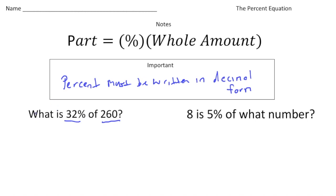So the part is going to be the unknown. We're going to say n is going to equal, right, 32% as a decimal is 0.32, or 32 hundredths, times the 260. And when I do 32 hundredths times 260, the answer ends up being 83.2. So 32% of 260 is 83.2.